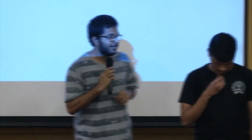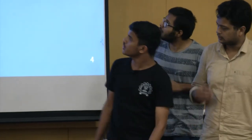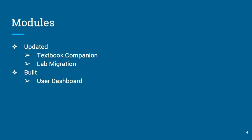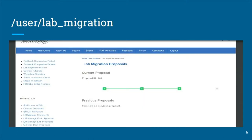There are three modules we have mainly worked on: textbook companion, lab migration, and a new user dashboard. The user dashboard aims to provide users and admins the ability to track the status of proposals more interactively for TBC and LM projects. This module can be used in many other FOSS websites supporting Drupal 7. It helps users view their current proposals and helps admins view all proposal statuses.